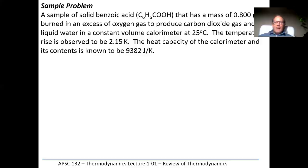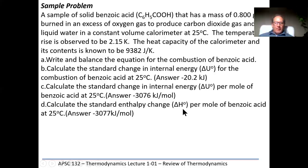First, balance the equation. Benzoic acid is a benzene ring with six carbons and five hydrogens, with the sixth carbon being a carboxylic acid (C6H5COOH). Balance carbon first by putting a 7 in front of CO2. Then balance hydrogen: there are 6 hydrogens, so 3 moles of liquid water. Finally balance oxygen: on the right there are 14 from CO2 plus 3 from water equals 17, minus the 2 already in the acid leaves 15 needed, giving 15/2 O2. The questions ask us to calculate: (a) standard change in internal energy for the combustion, (b) per mole of benzoic acid, (c) standard enthalpy change per mole.